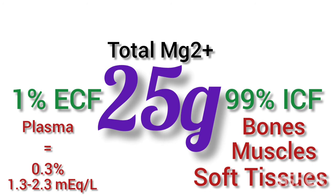The normal plasma magnesium value is around 1.3 to 2.3 milliequivalents per liter. Today we will be discussing magnesium under three main headings: hypomagnesemia, hypermagnesemia, and the therapeutic roles of magnesium.